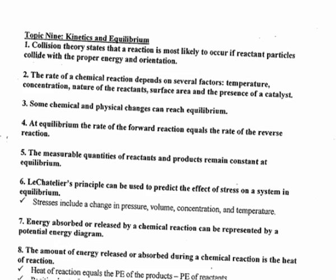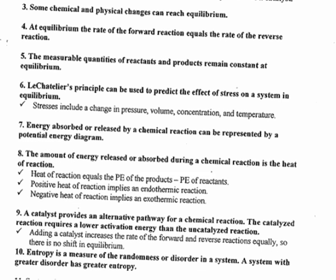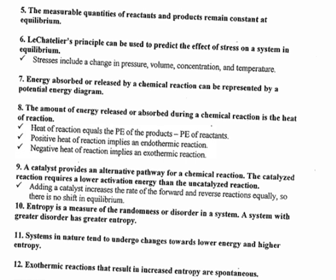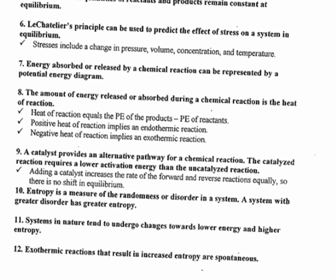Le Chatelier's principle — we know it as a shortcut. On the same side of the double arrow, the opposite thing will happen. On the opposite side of the double arrow, the same thing will happen. We need to know a potential energy diagram, which we're going to outline below. A catalyst lowers activation energy so that the reaction happens quicker.